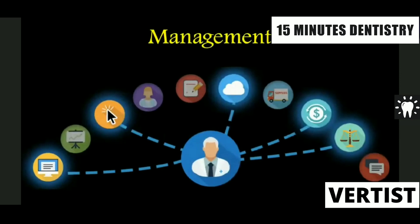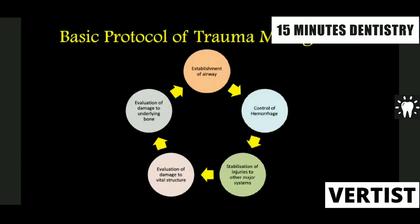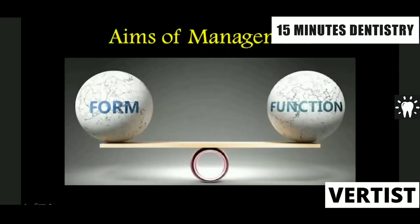Coming to the management of fractures of the mandible: the first thing is to establish the airway and control hemorrhage if present. When you get a patient with extensive hemorrhage in the facial region, you can just put a pressure pack. If it is from the fractured bone, try to do a temporary stabilization and suture the soft tissues. However, if the patient has abdominal or thoracic hemorrhage, one needs to be very careful. Stabilize other injuries, evaluate damage to vital structures, and then lastly repair the fractured bone. This has to be a perfect balance between form and function.